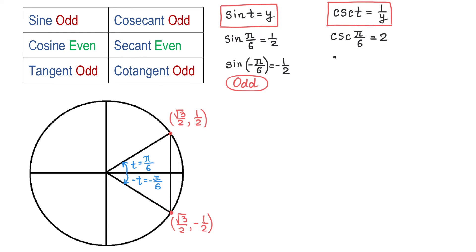However, cosecant of negative pi over 6 will be negative 2. Again, when we replace t with negative t, we get opposite values. Then we will say that cosecant is also an odd function.